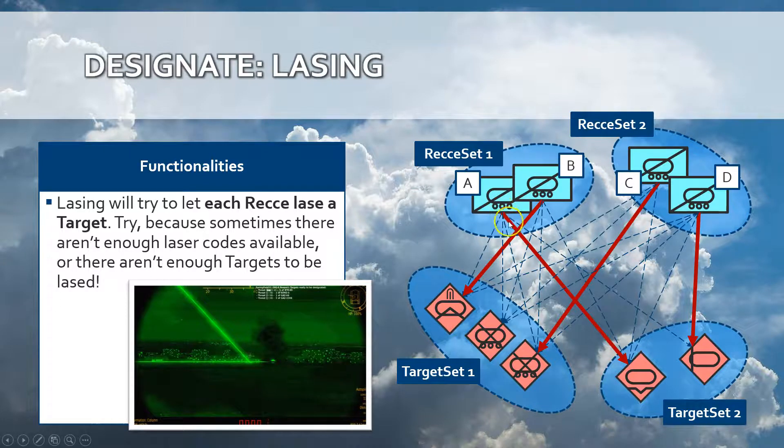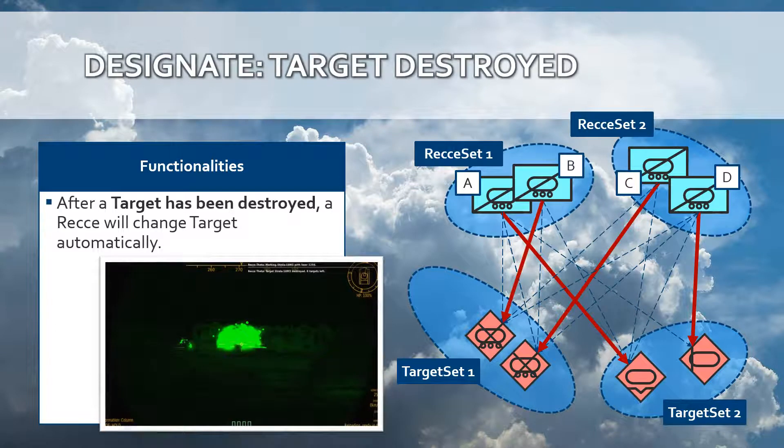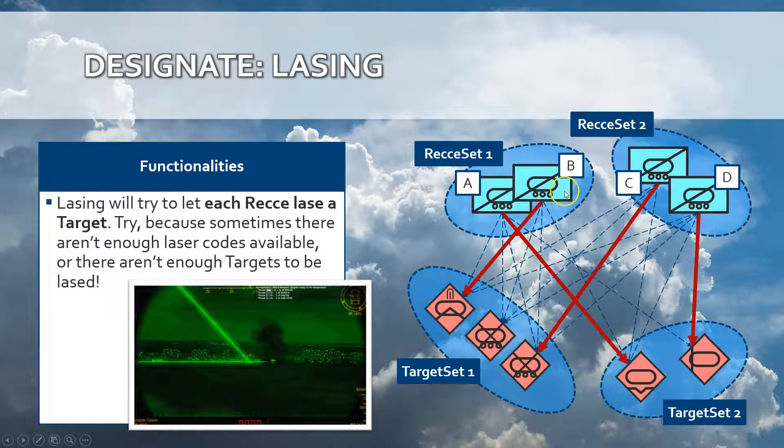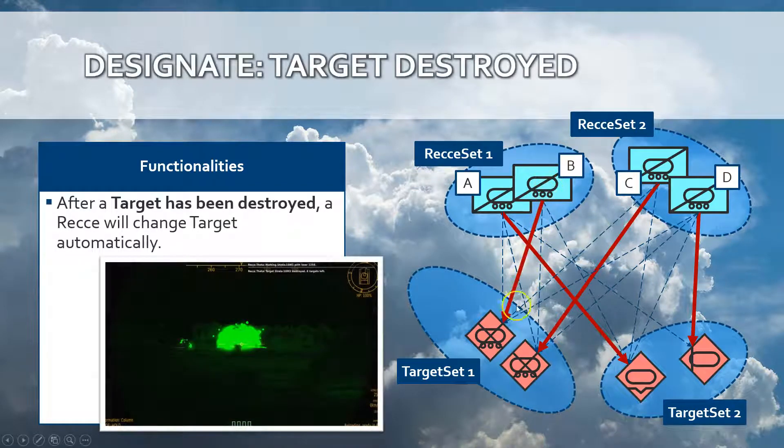Each reconnaissance vehicle can only mark one target. So the designate class will try to use as many reconnaissance vehicles as possible. When the target gets destroyed, the reconnaissance will change the target automatically. Watch the animation. Reconnaissance vehicle B was lasing this target but it got destroyed, so it will automatically switch targets to one that was not yet lased. When switching targets, it will report the destruction of the target and report the new target being lased.